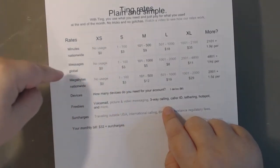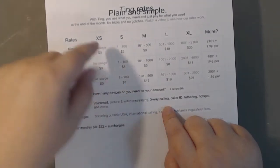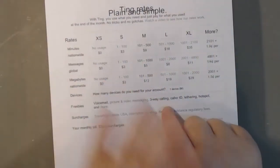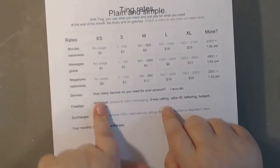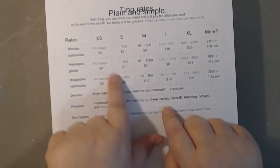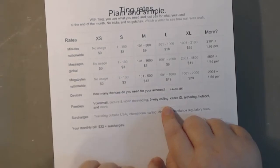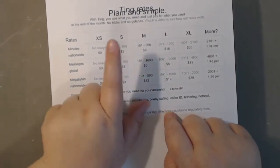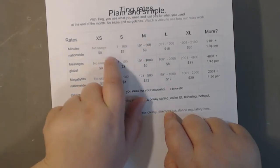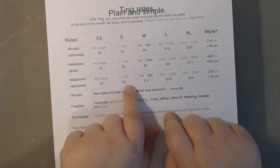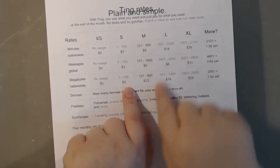They have minutes, messages, and megabytes, and they've got small, medium, large, extra large, or even more. They even have an extra small plan, so if you never use any megabytes, you're not going to get charged for that. Or if you just don't text, you're not going to get charged for that. So it starts out, the small plan is one to a hundred minutes is $3, one to a hundred messages is $3, and one to a hundred megabytes is $3.